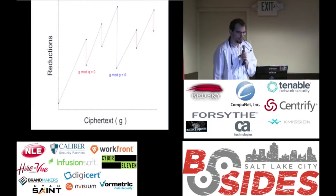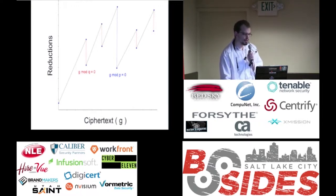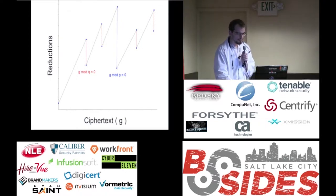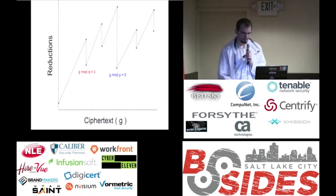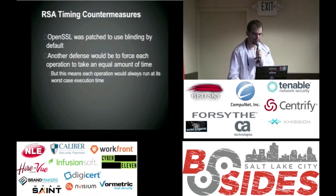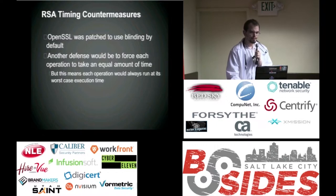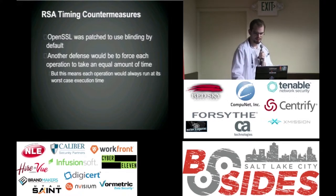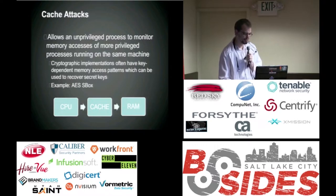A key part of the OpenSSL timing attack was that the probability of an extra Montgomery reduction depended on the value of your chosen ciphertext to decrypt. So by choosing your ciphertext carefully, you could get information about what Q or P is — parts of what determines your secret key. OpenSSL patched this by making blinding the default option. Another option would be forcing everything to take an equal amount of time, but that's unpopular because it ruins performance, making every operation take the worst possible execution time.